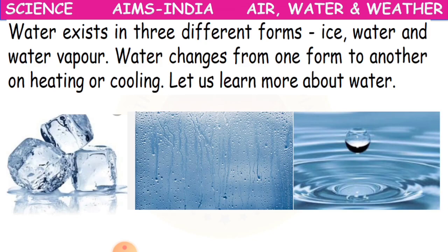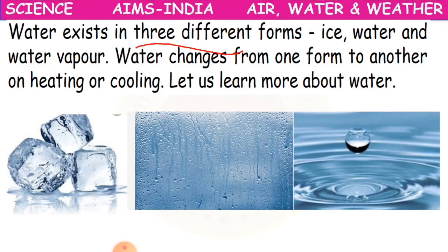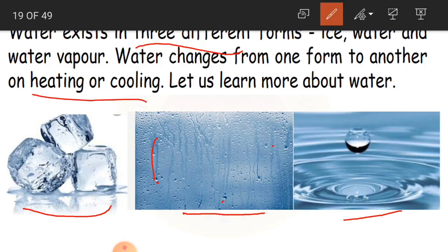Water exists in three different forms. What are they? They are ice, water, and water vapor. Ice is one form, and water vapor is another form. This is how water looks in its different states.